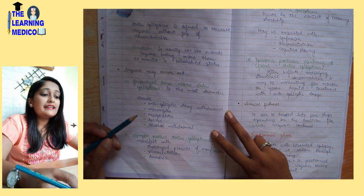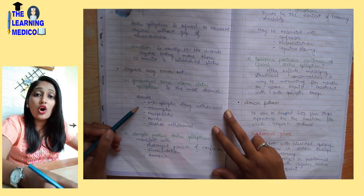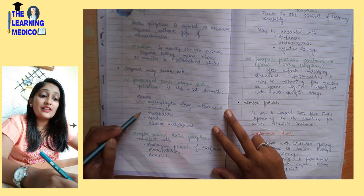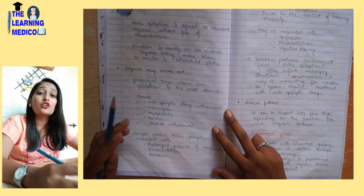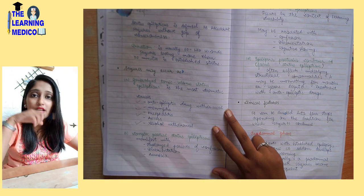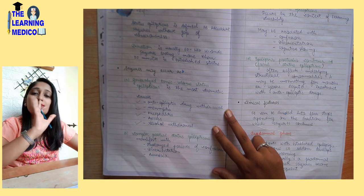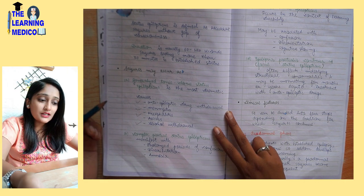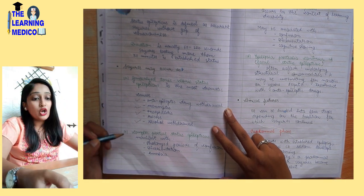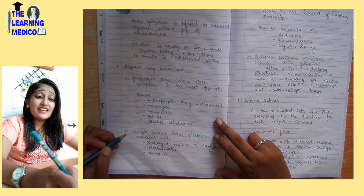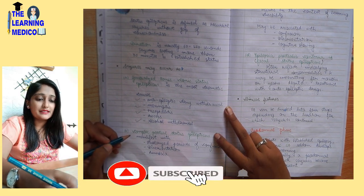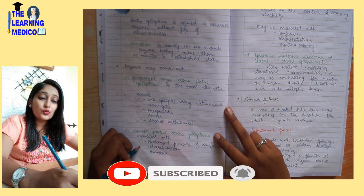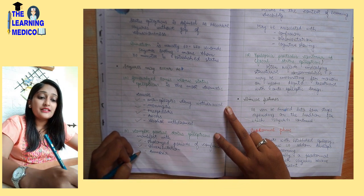Causes include withdrawal of anti-epileptic drugs, burns, meningitis, encephalitis, or alcohol withdrawal. Alcohol cannot be stopped abruptly; if it is stopped suddenly, the patient goes into withdrawal. Next is complex partial status epilepticus, which manifests with a prolonged period of confusion, disorientation, and amnesia.